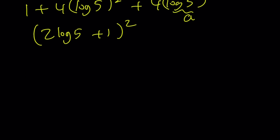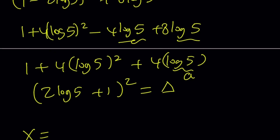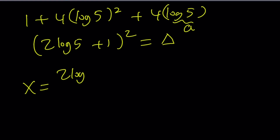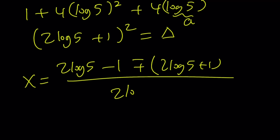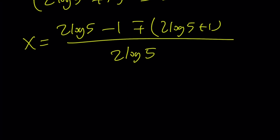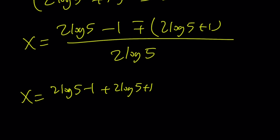So x equals (2 log 5 minus 1) plus or minus (2 log 5 plus 1), all divided by 2 log 5. Splitting into two roots — for the plus case: 2 log 5 minus 1 plus 2 log 5 plus 1. The ±1 terms cancel, giving 4 log 5 over 2 log 5, which equals 2. That's the solution you probably already guessed.